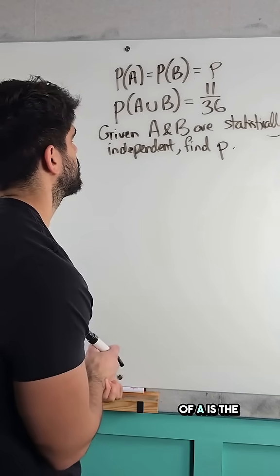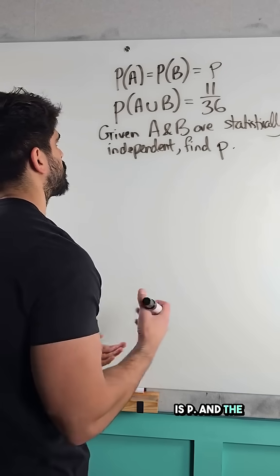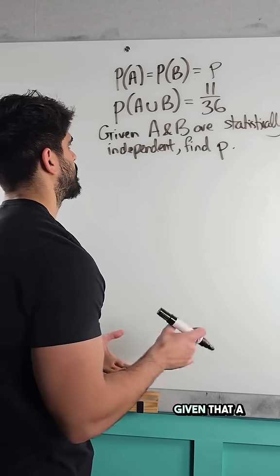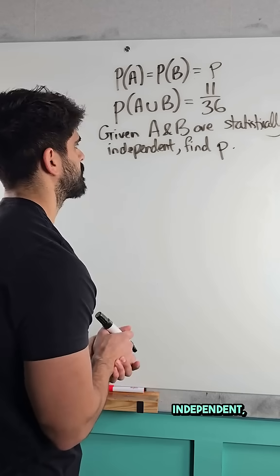So it says the probability of A is the same as the probability of B is P, and the probability of A OR B is 11 over 36. Given that A and B are statistically independent, find the value of P.